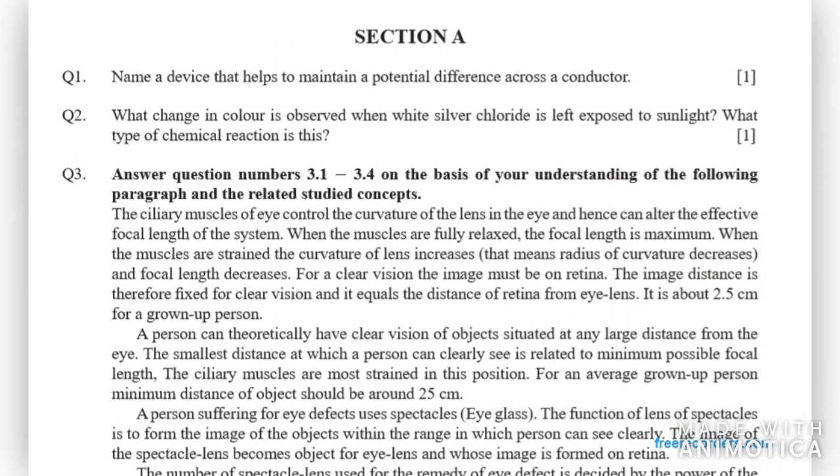Let's start with section A first. The first question says, name a device that helps to maintain a potential difference across a conductor. So the answer for this is electric cell or a battery. Either you can write electric cell or electric battery.